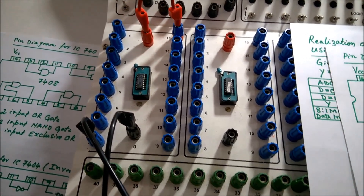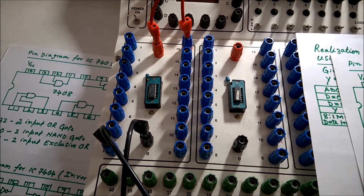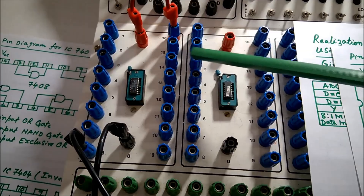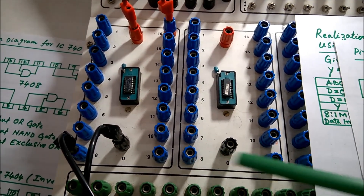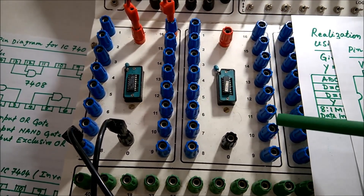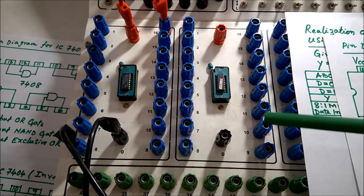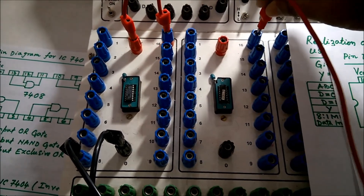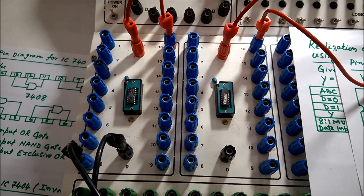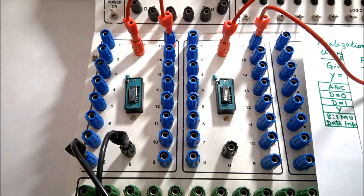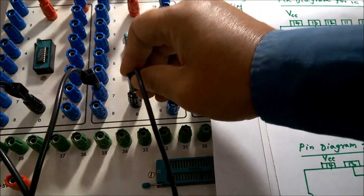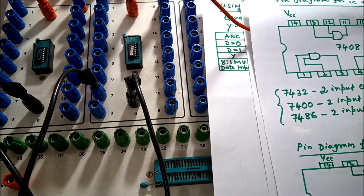For the 7404 NOT gate IC, pin 14 is VCC and pin 7 is ground. Connect pin 14 to VCC and pin 7 to ground. Now both ICs have their VCC and ground connected.